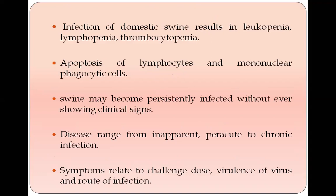Infection of domestic pigs results in leukopenia, lymphopenia, and thrombocytopenia. The virus also causes apoptosis of lymphocytes and mononuclear phagocytes. Pigs may become persistently infected without showing clinical symptoms, or disease may range from inapparent to per-acute or chronic, depending on the challenged dose, virulence of the virus, or route of infection.